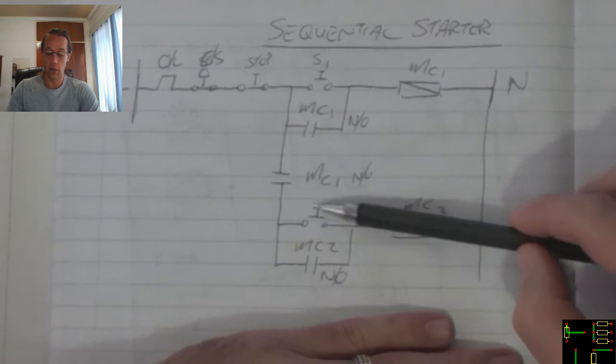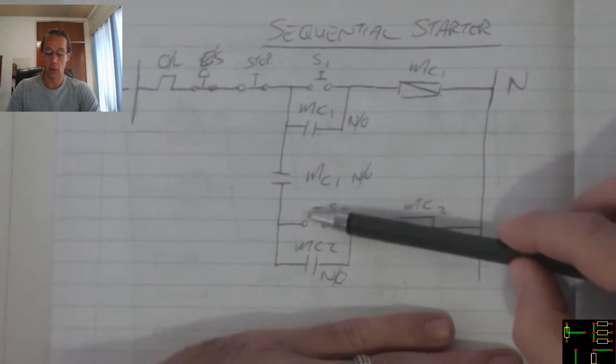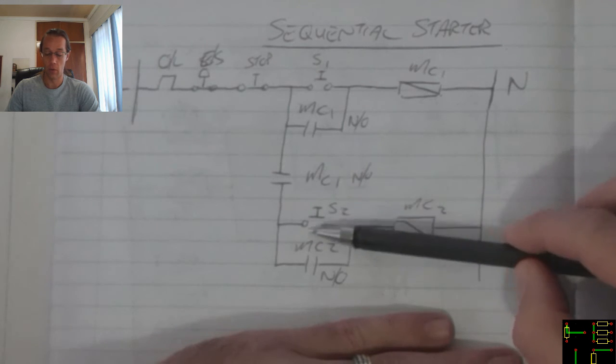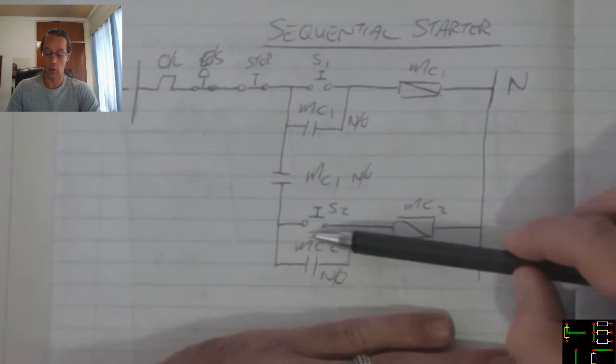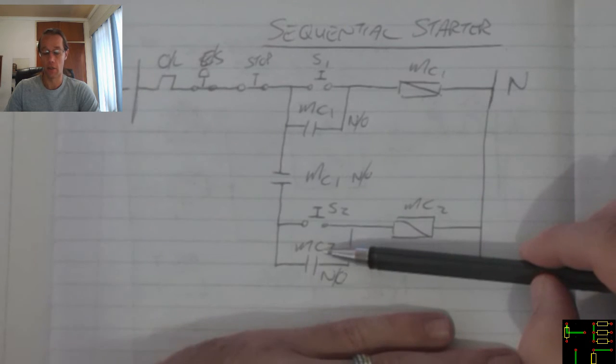Now this branch will only become active once I push switch number two. When I push switch number two, contactor two will activate which in turn will activate this latching contact.